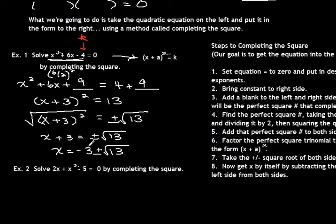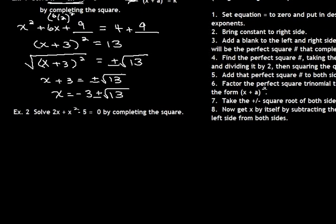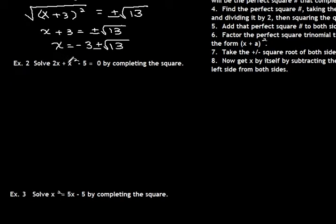These take a lot of practice, so I intend to do several problems. Okay, here we go — our next one. Solve by completing the square. First thing you have to do is set it equal to 0 and make sure it's in descending order of variables. It's not, so we have to rearrange it. So you get x squared plus 2x minus 5 equals 0.